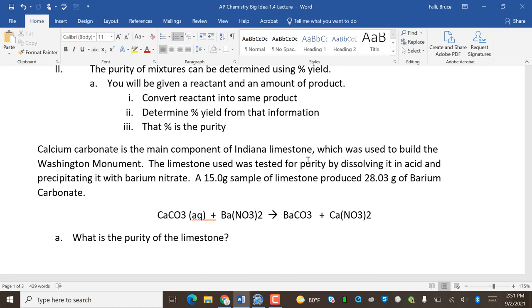Calcium carbonate is the main component in Indiana limestone, the greatest limestone ever, which was used to build the Washington Monument and many other great buildings. The limestone used was tested for purity by dissolving it in acid and precipitating it with barium nitrate. A 15 gram sample of limestone produced 28.03 grams of barium carbonate. So this is what we thought was limestone, and I had 15 grams of this, and I reacted it with excess barium nitrate, and this turned into this. So what happened is this was aqueous, this was aqueous. So it looks like water. This is a solid that I can then filter and precipitate out, and this is aqueous.